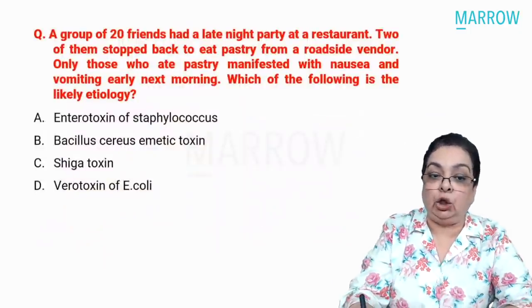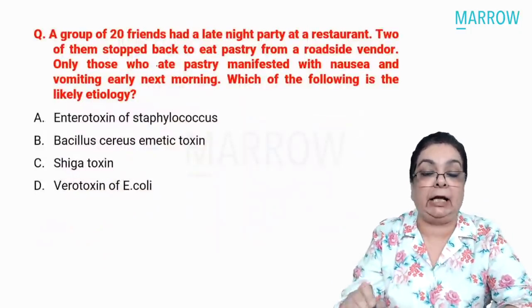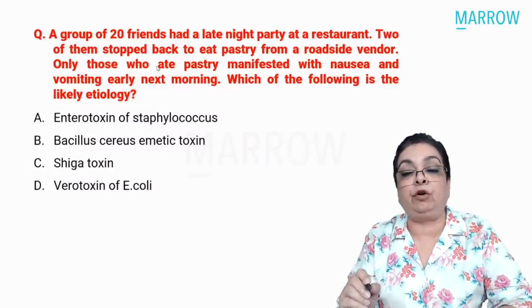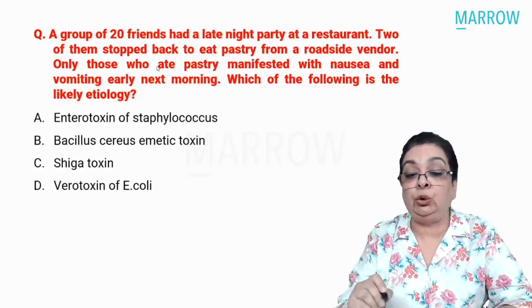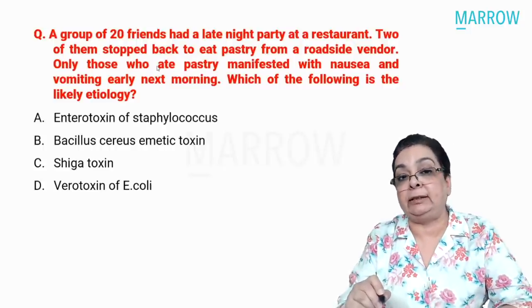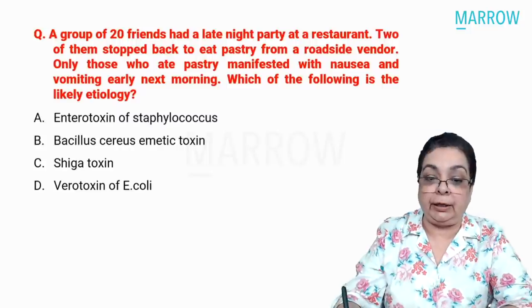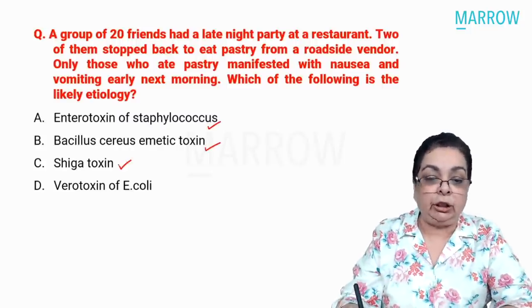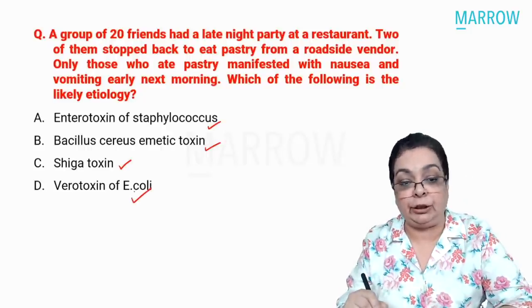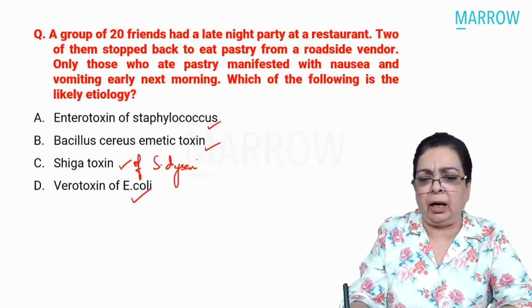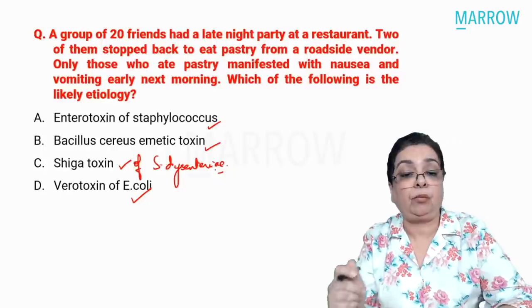Question 2: A group of 20 friends had a late night party at a restaurant. Two of them stopped to eat pastry from a roadside vendor. Only those who ate pastry manifested with nausea and vomiting early next morning. Which is the likely etiology? Options: enterotoxin of staphylococcus, Bacillus cereus emetic toxin, Shiga toxin, or verotoxin of Escherichia coli (Shigella dysenteriae for the Shiga toxin option).